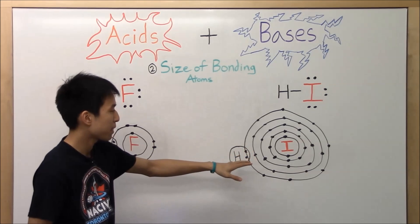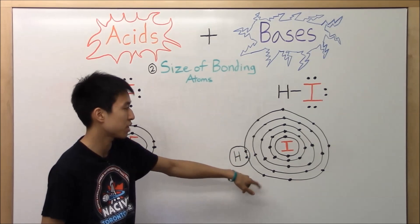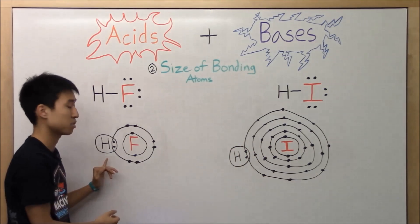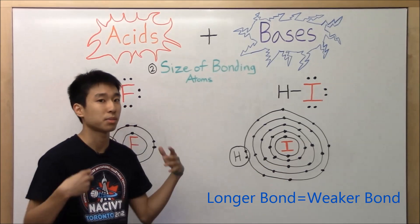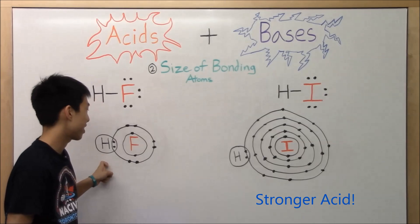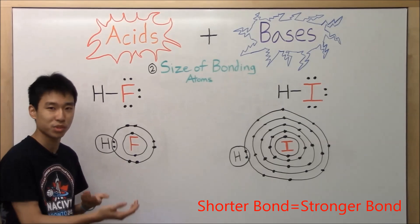So over here, as you can see, the bond between hydrogen and iodine is going to be so much longer compared to the bond with hydrogen and fluorine. And with a longer bond, it also means a weaker bond. And you know what that means about acids. And yeah, we take a look at fluorine here, shorter bond.